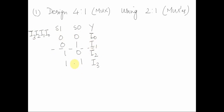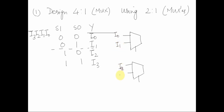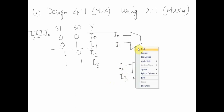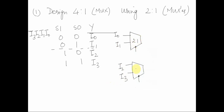This tells us our implementation needs to be a two-stage MUX. We use three 2-to-1 MUXes. The first two MUXes each have select line S0, and the third MUX has select line S1. Connect S0 to the select lines of the first stage MUXes. When S0 is 0, I0 enters the first MUX and I2 enters the second MUX.